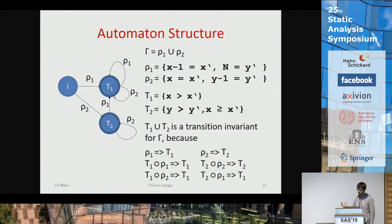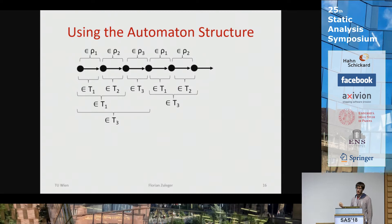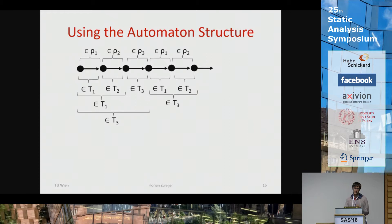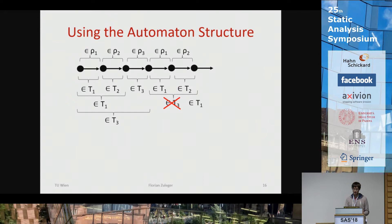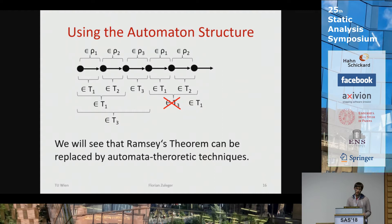The key effect of this observation: before, I showed the Ramsey theorem picture where between certain steps we know the relations. With the automaton, when you take certain steps you know more — the automaton determines which relation you are in. This is the main reason you do not need Ramsey's theorem; you can get by purely by automata-theoretic techniques to show termination.